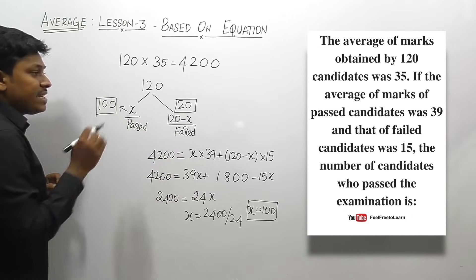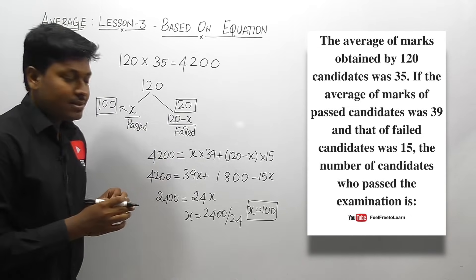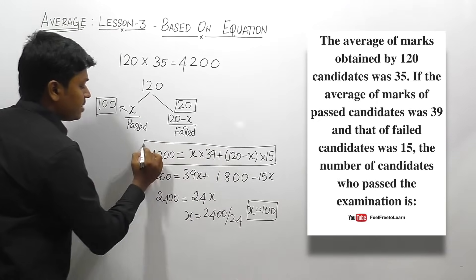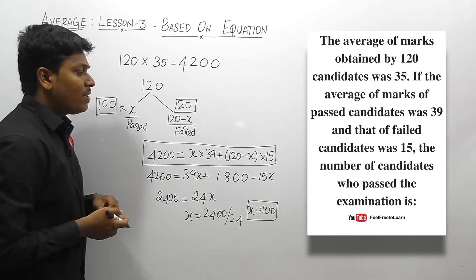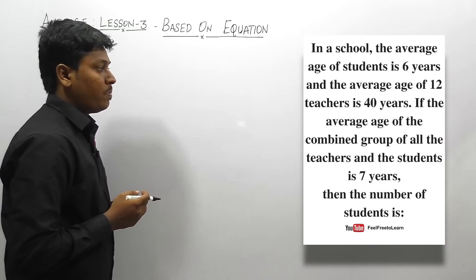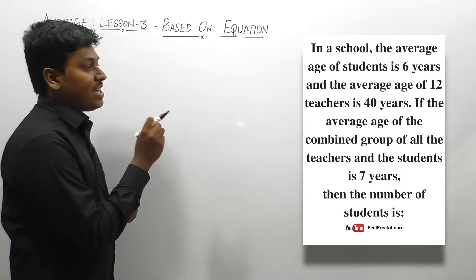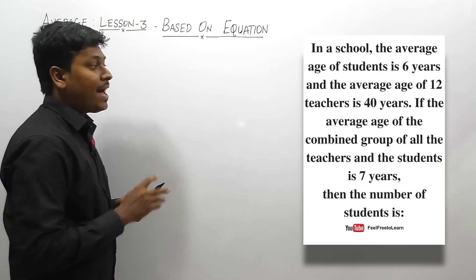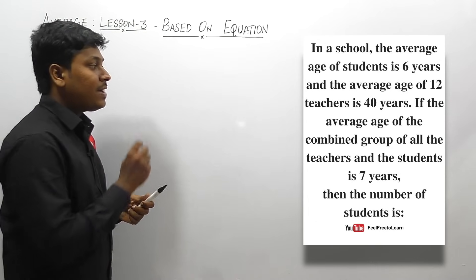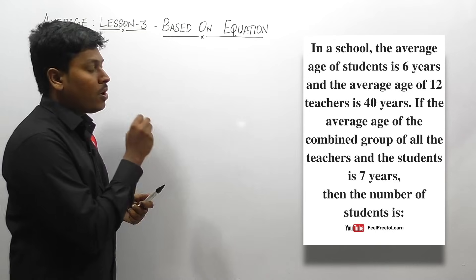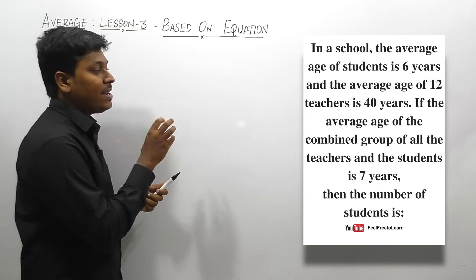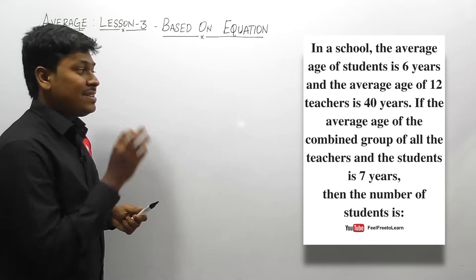Finally, x equals 100, meaning 100 candidates passed. Out of 120, the remaining 20 candidates failed. For solving these types of questions, our only target is to frame the equation correctly. Question number two: in a school, the average age of students is 6 years and the average age of 12 teachers is 40 years. If the average age of the combined group is 7 years, find the number of students.